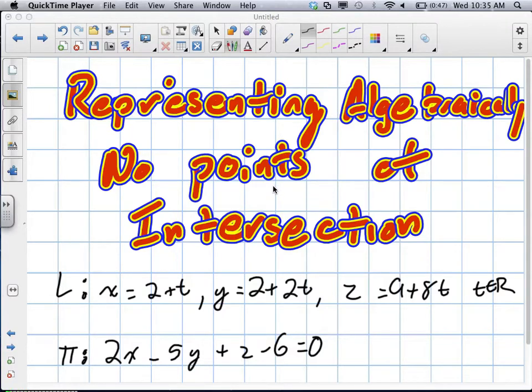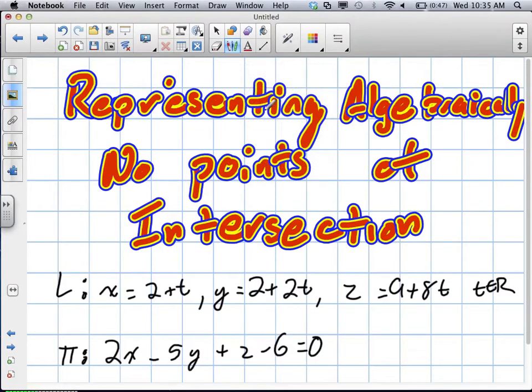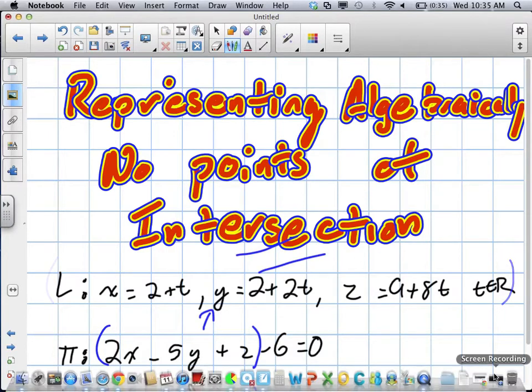If we'd had this in vector form, we probably could have made some reference to the direction vector and the normal of this. And if the direction vector of this line and the normal, meaning perpendicular to this line, were also perpendicular, that would mean that these two lines are definitely parallel to each other.